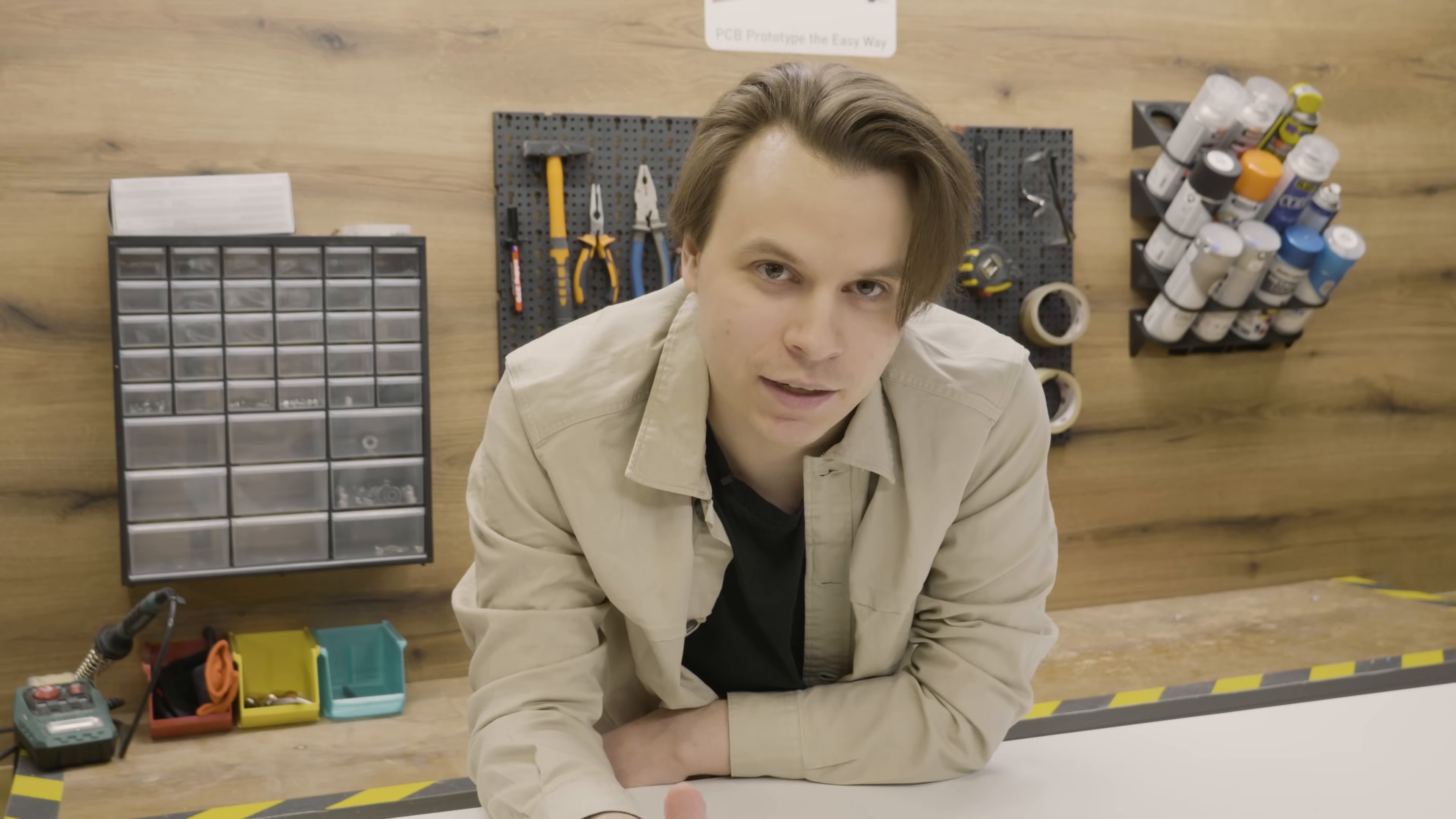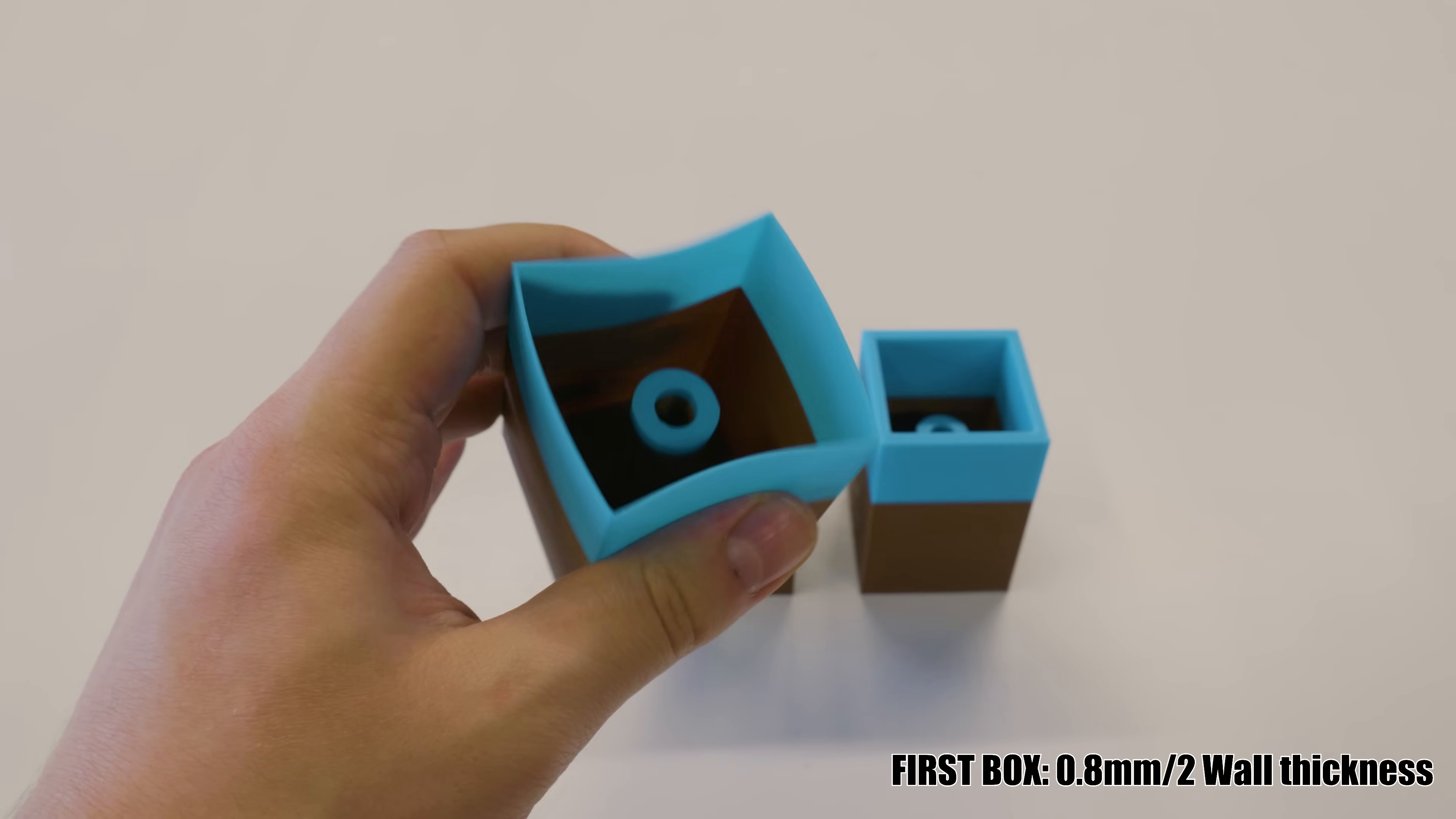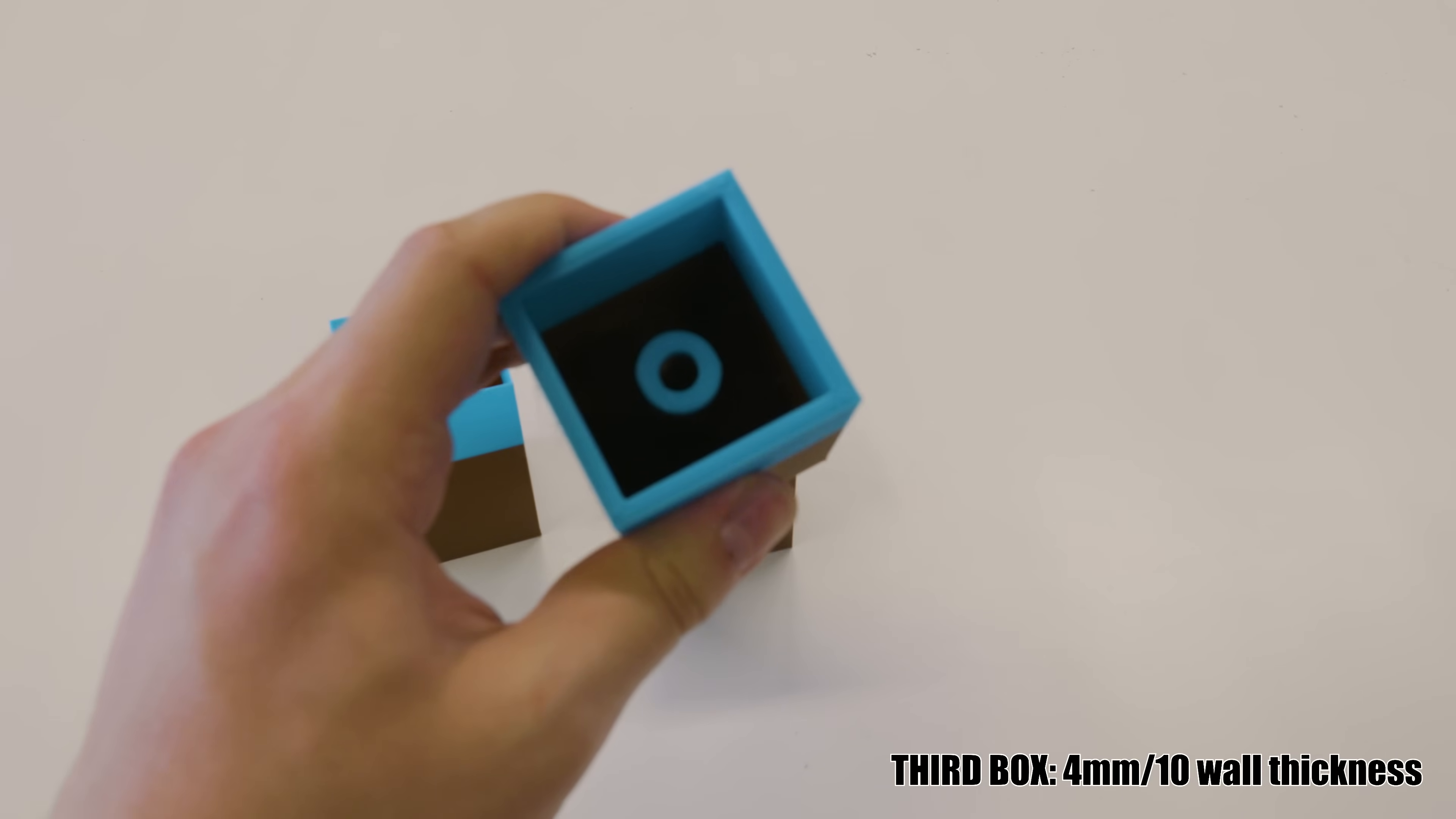So we are going to test will PLA actually leak. And we are going to test this with those little boxes. For one material there are 3 boxes with different wall thicknesses. The first one is 0.8mm, the second 1.6mm, and the thickest 4mm. This will give us information - does printing models thicker help with the leaking?